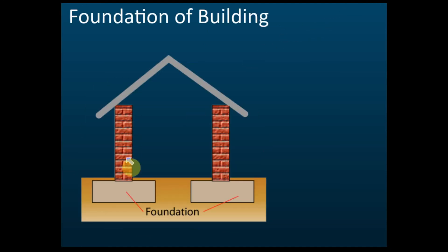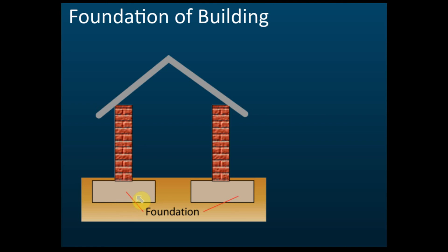Foundations of a building. The wall sits on the foundation, which is inside the ground — you can't see it unless you dig it out. The foundation of the building is purposely built with a larger area. This is to reduce the pressure, because the building is very heavy. We use a large surface area for the foundation to reduce the pressure that the building exerts on the soil or ground. So it is a low pressure on the soil.